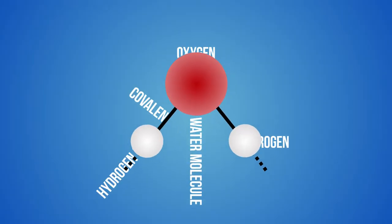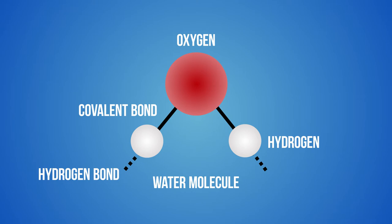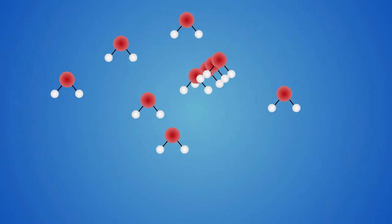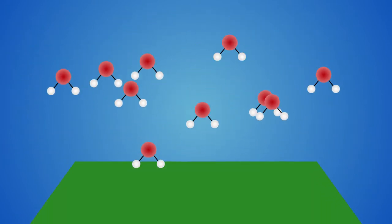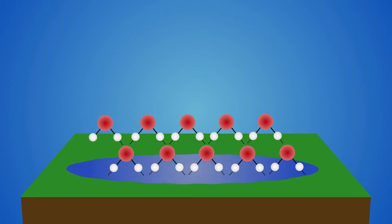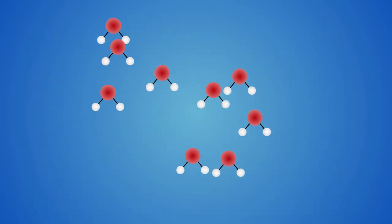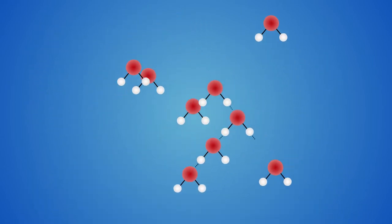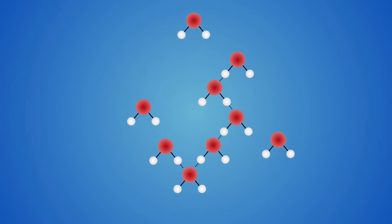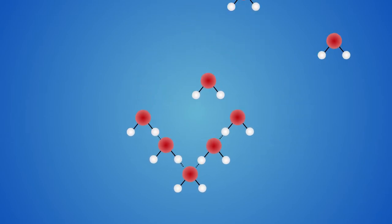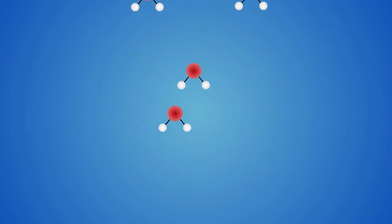However, when we talk about evaporation and condensation rates we usually mean from a flat surface. In a very large droplet or flat surface there are many molecules binding a molecule near the surface, making it relatively hard for it to evaporate and leave the droplet. In a small droplet there are fewer molecules binding a surface molecule in place, so evaporation is easier. This means that it's virtually impossible for a water droplet to form in a cloud — it evaporates as soon as it starts forming.